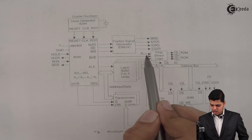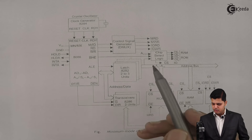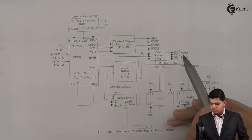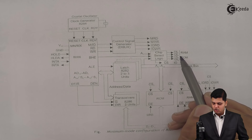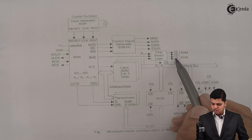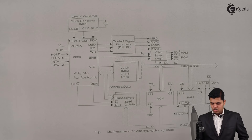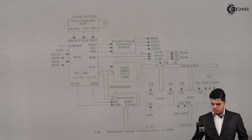A0 and BHE bar are used depending on whether the 8-bit data being fetched from memory comes from the even address bank or the odd address bank. From the combination of A0 and BHE bar, the CSE — chip select for even segment — and CSO — chip select for odd address memory — are derived and provided to the respective memories for chip select logic. This is the minimum mode configuration of the 8086 from which we are going to form the memory read cycle.